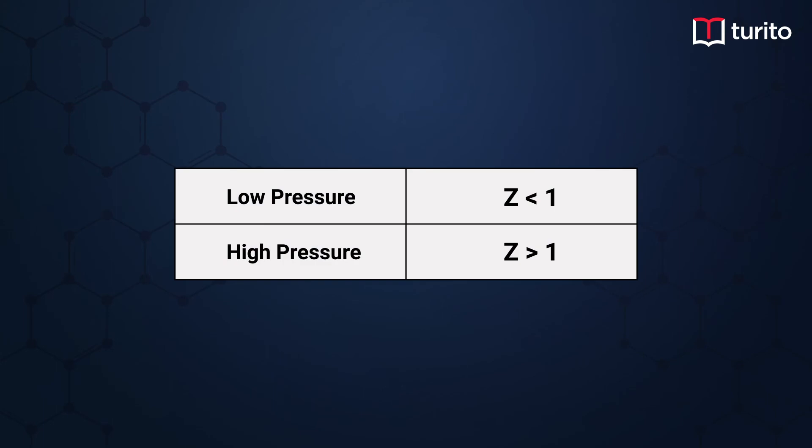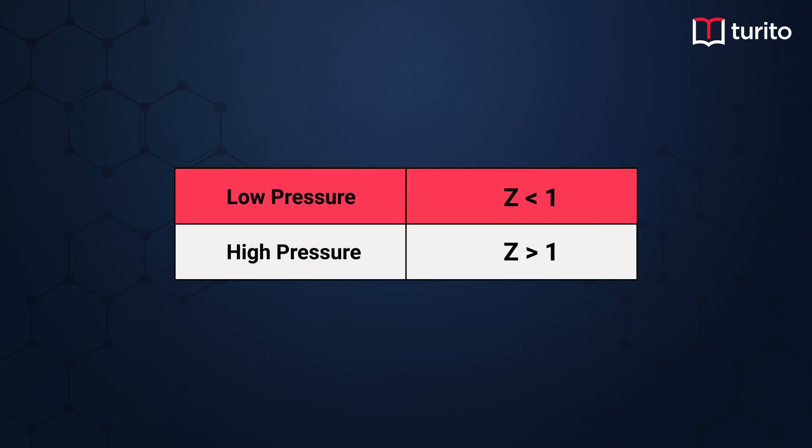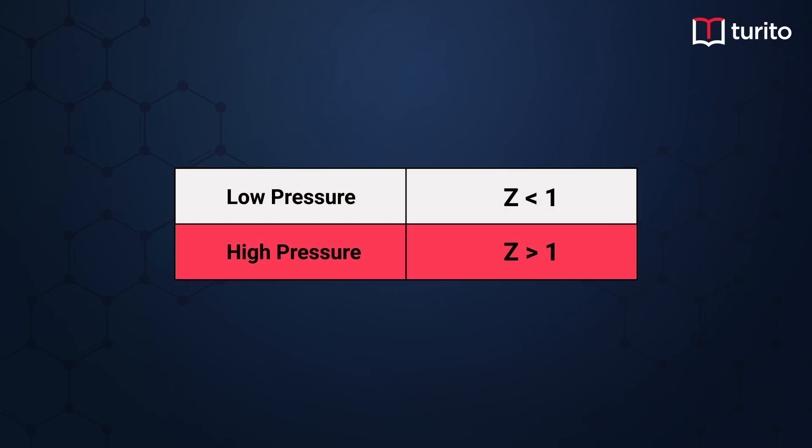So remember: Z is less than 1 at low pressure, while it is greater than 1 at high pressure.